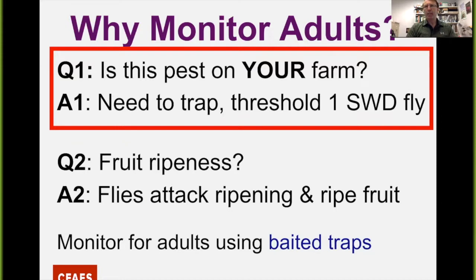The second question is: if we have that fly, what's the ripeness of the fruit in that field? We know the flies by themselves don't attack foliage — they attack the fruit. So the fruit has to be either ripening or ripe for it to be susceptible and for us to really get those management tactics rolling. This next couple of slides is really dedicated to the monitoring of those adult flies.